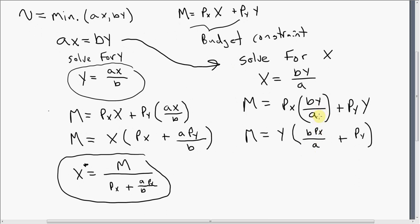And then the next step is to divide through by what's in parentheses. Write it this way. And you now have your demand for good y.